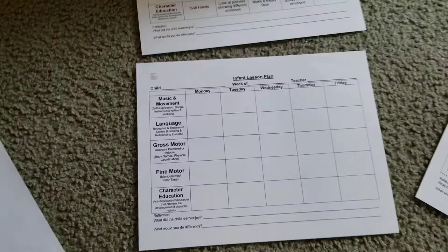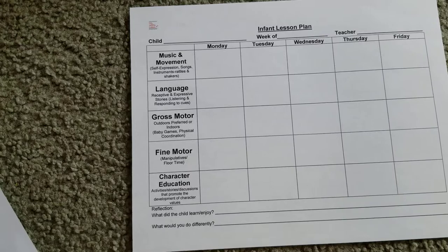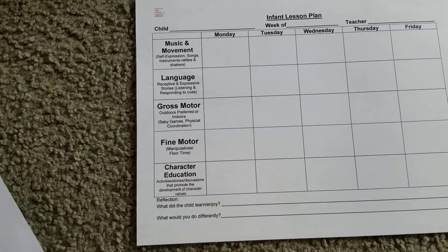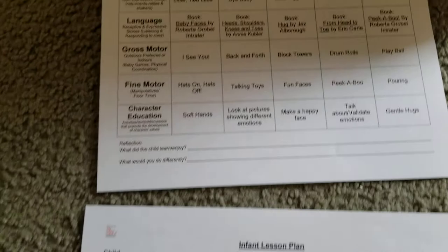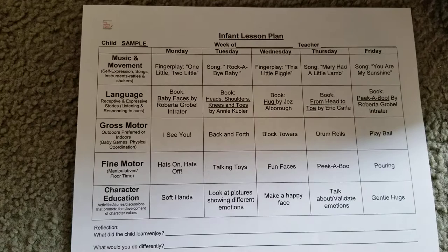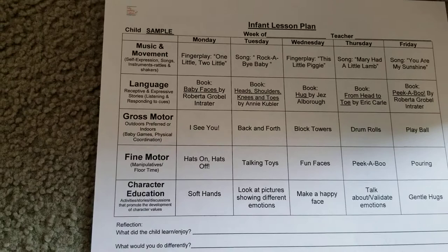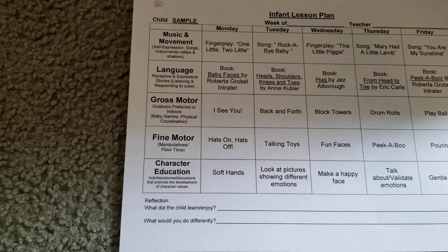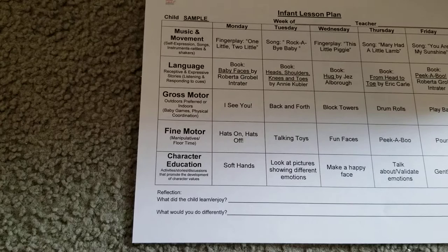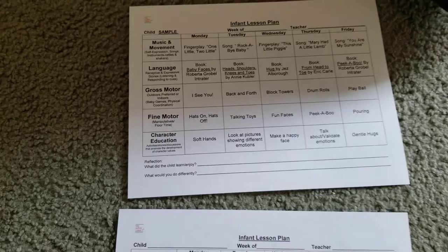Let's move over to an infant lesson plan. The infant lesson plan will include music and movement, language, gross motor, fine motor, and character education. Yes, infants can have their own lesson plans because they need some structure and organization in their day as well. Here's a sample of how that is filled out. For Monday, music and movement is finger play — the song you'll sing is 'One Little, Two Little.' For language you have the book 'Baby Faces.' For gross motor, 'I See You.' For fine motor, 'Hats On, Hats Off.' And for character education, 'Soft Hands.'